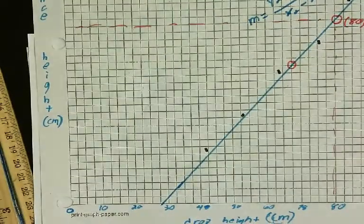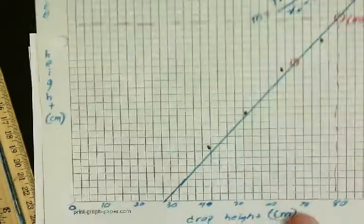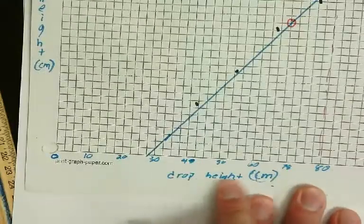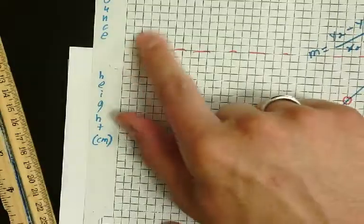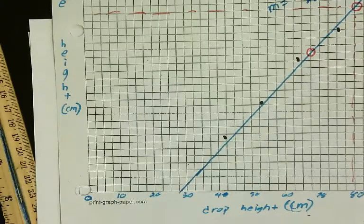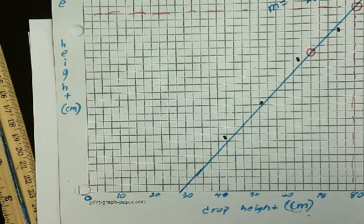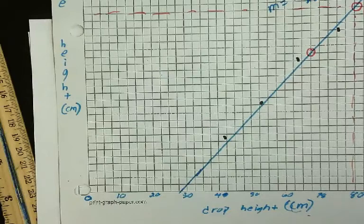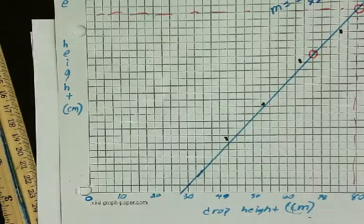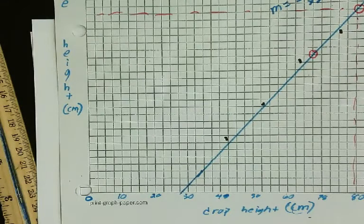So go ahead and get your stuff set up. You should also label what your x-axis is, label what your y-axis is. You can do that online also. Click on that wrench, write in drop height for your x, write in bounce height for your y. Okay. I'm going to come around again to see how y'all are doing and if we need any help here.